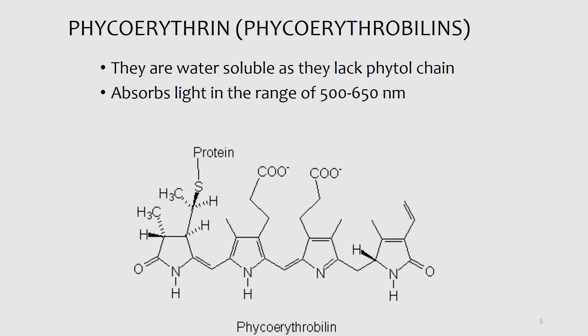Here is the structure of phycoerythrin, or phycoerythrobilin. They are water soluble and they lack a phytol tail. They also absorb light in the range of 500 to 650 nanometers. There is no chelating agent, they are attached to a protein, and they lack the phytol tail.